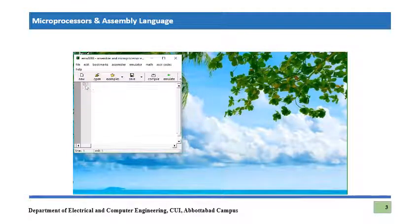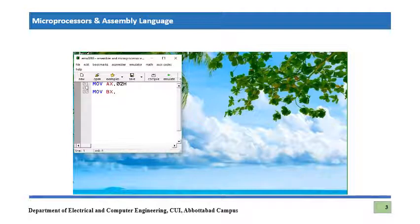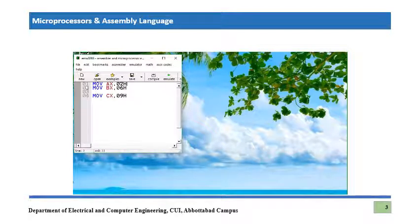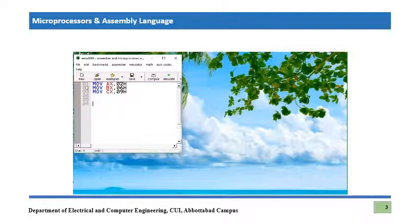Let's move three different random numbers into data registers AX, BX, and CX. So let's say: MOV AX, 02h; then we move 06h into BX; and then MOV CX, 09h. So these are the three different numbers. This is the first part of our program, in which we are moving three different numbers into the data registers. Now we have to develop logic to verify which one of them is the larger one.